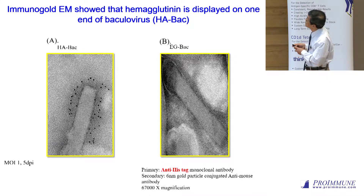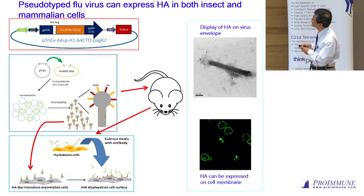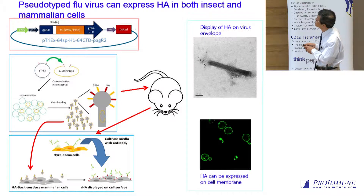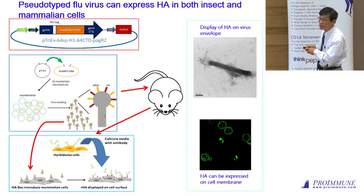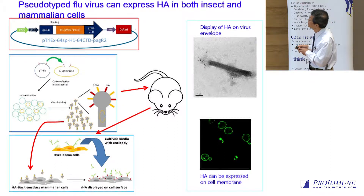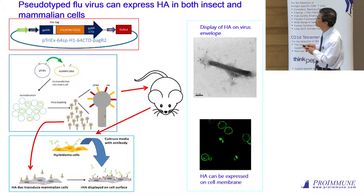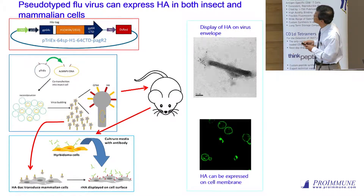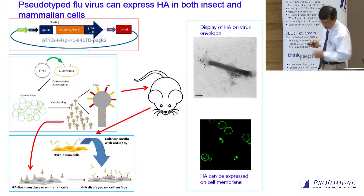We used insect cells to generate this kind of pseudovirus, then injected pseudovirus into mice and found we could generate antibody. We also used the same virus to infect either insect or mammalian cells — in mammalian cells we call it transduction, not infection. In insect cells, baculovirus produces two major surface proteins: hemagglutinin and GP64. In mammalian cells, it produces only HA. This makes the system cleaner for assaying antibodies, especially monoclonal antibodies collected from mice.